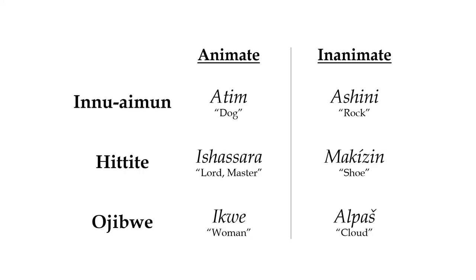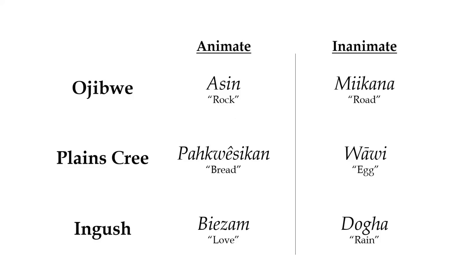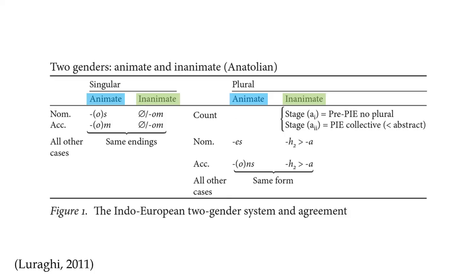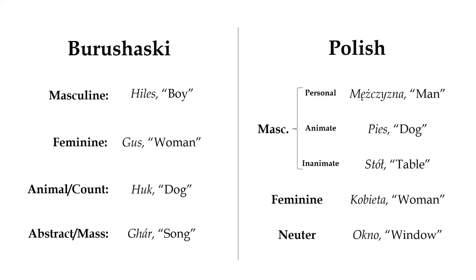In languages with grammatical gender or noun classes, animacy is likely to be one of the main semantic properties by which the genders are distinguished. Having a binary split between animate and inanimate genders is one of the more common gender systems, even occurring in Proto-Indo-European before the innovation of masculine and feminine genders later on. In languages with more than two genders, some or all of the genders may be associated with particular levels of animacy, or certain genders may be divided into sub-genders based on animacy.